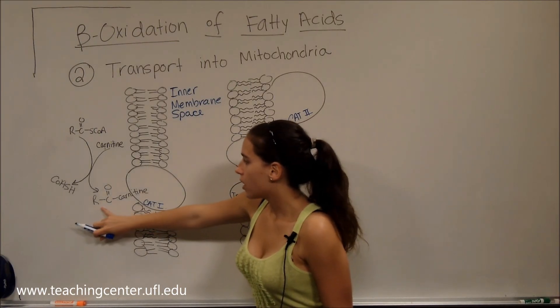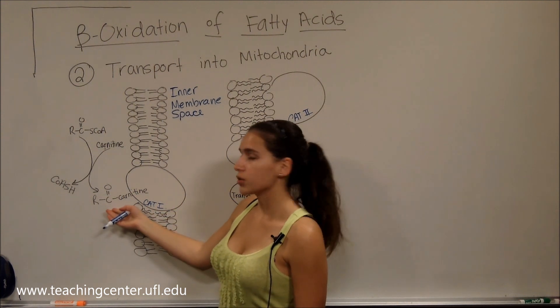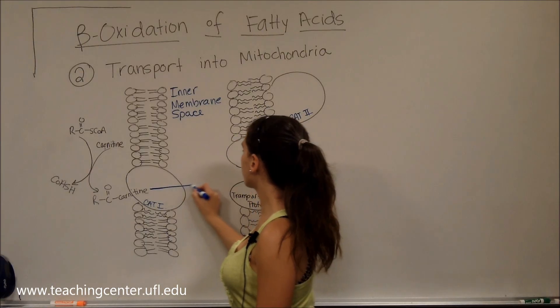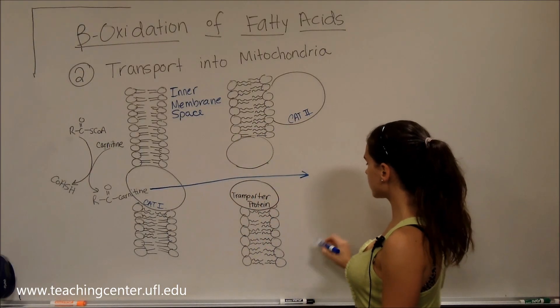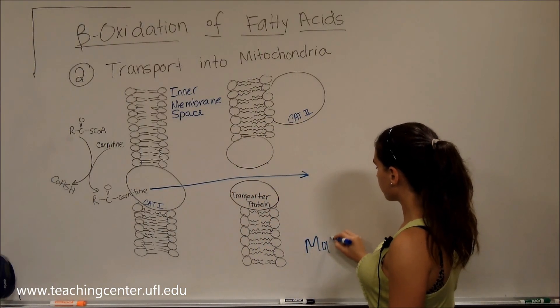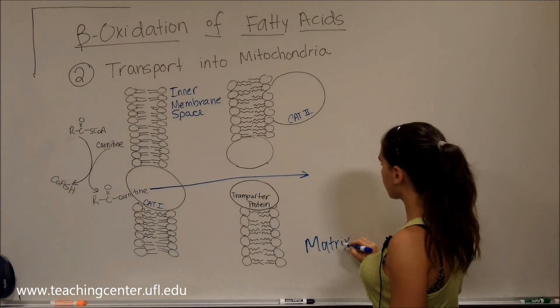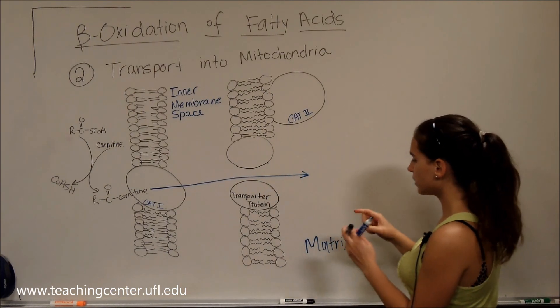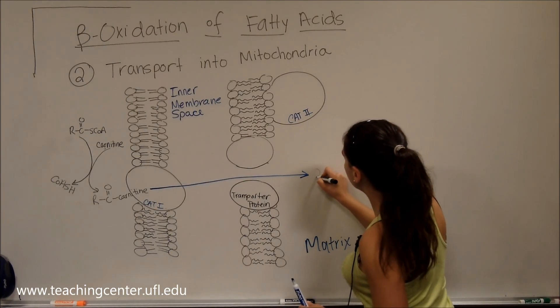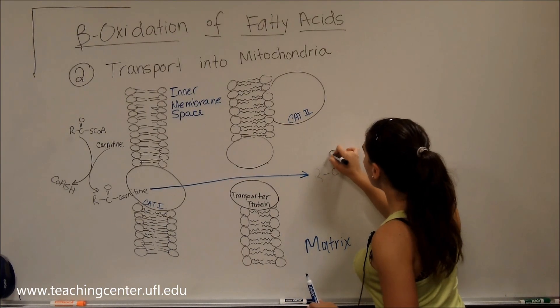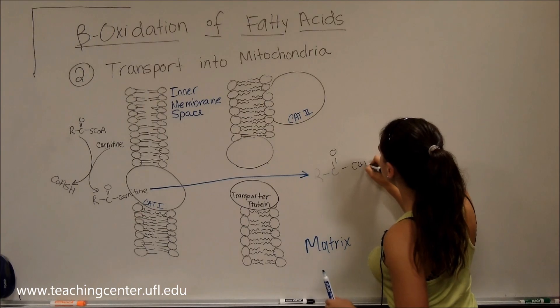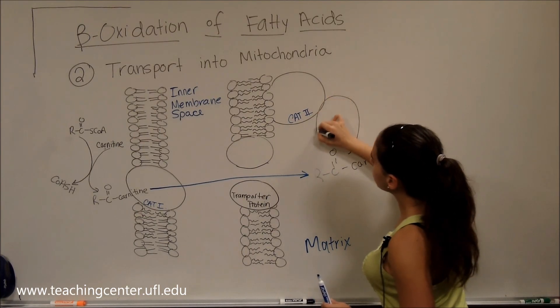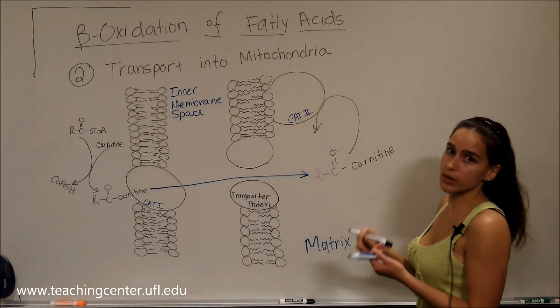From there, this fatty acyl CoA that we added the carnitine to, we're going to shuttle it into the matrix. This is the matrix, through these transporter proteins. And then from there, we're going to take off that carnitine by the action of CAT2, which is carnitine acyltransferase 2.